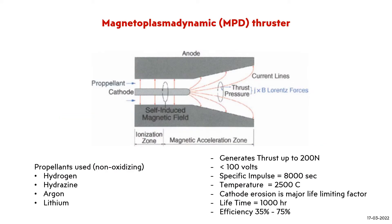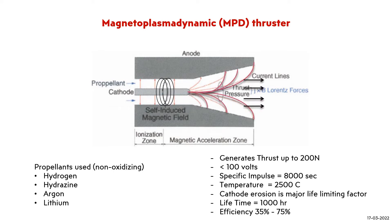Now let's see what is the Magnetoplasmadynamic MPD Thruster. In the MPD Thruster, also known as the Lorentz Force Accelerator (LFA), a high current discharge of kilo-ampere range at less than 100 volts is applied between two coaxial electrodes. The discharge ionizes the propellant flowing through the electrode configuration. A variety of non-oxidizing propellants can be used, such as hydrogen, argon, and even alkali metals like lithium. The current generates a self-induced radial magnetic field that interacts with the current, as shown in the animation.